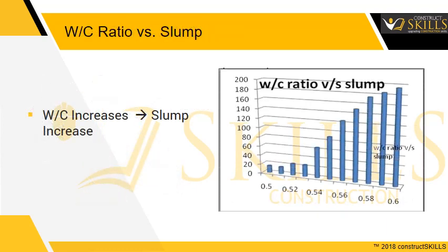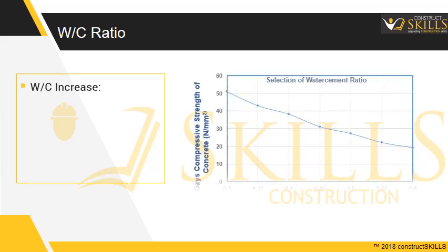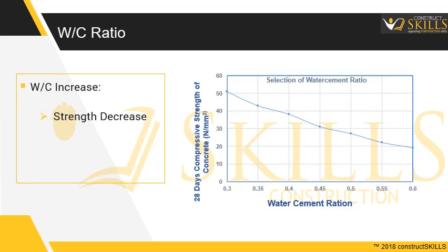As seen in the graph, as water content increases, slump increases drastically. If water is required to be increased, cement should also be increased such that it does not exceed the specified water cement ratio. However, a high water cement ratio also leads to a decrease in strength of concrete, as seen in the graph.